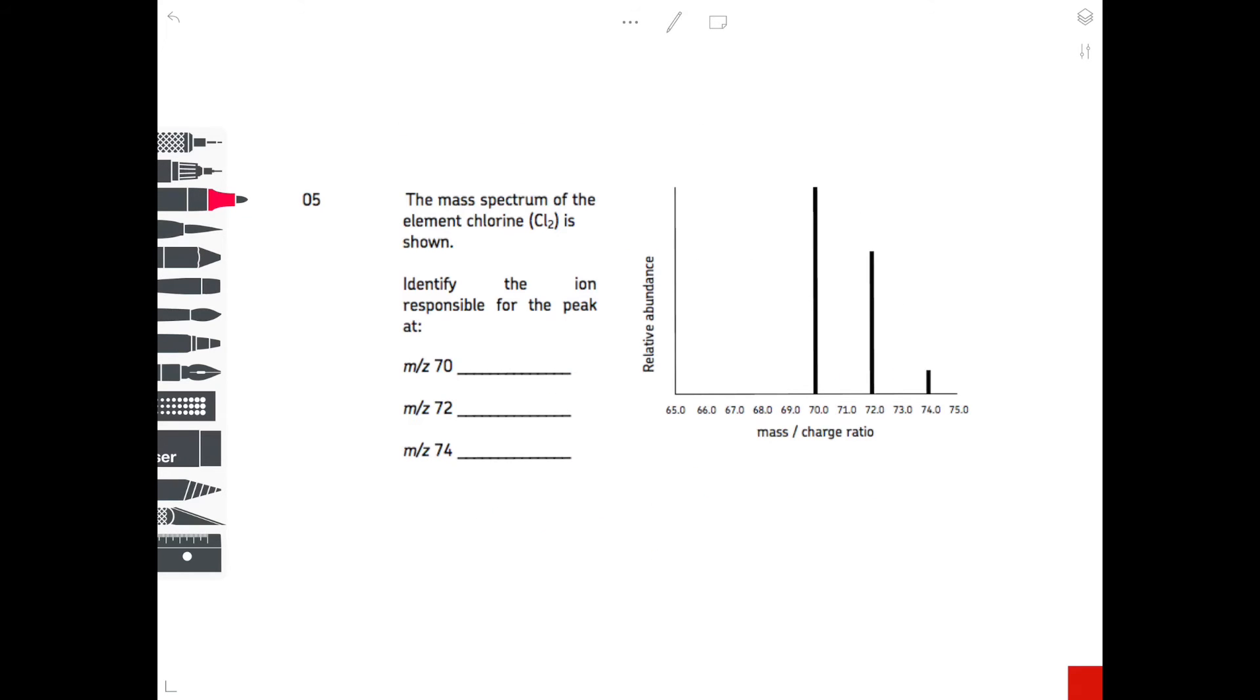Question five. The mass spectrum of the element chlorine is shown. Identify the ion responsible for the peak at... Now don't get confused here. Remember it's Cl2, which means that it's a diatomic molecule. So that actually means that you could have a diatomic molecule made up of two 35Cls, two 37Cls, and a 35Cl and a 37Cl, because you don't know which way they are combining when they are bonding. So make sure you're aware of the background chemistry when you look at these questions.